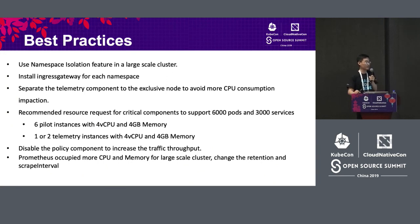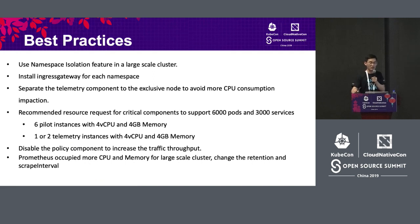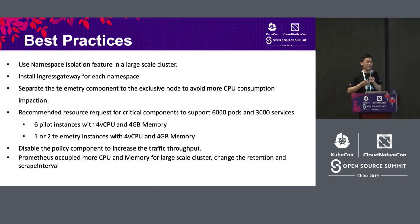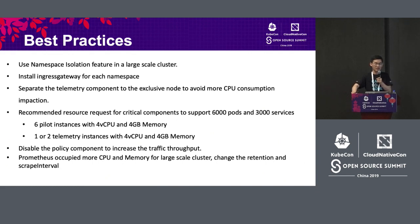Now I'll share some best practices based on our testing results. Number one: in a large-scale cluster, use the namespace isolation feature — you must enable namespace isolation because it is quite important. With the default Istio package there will be a file called global ServiceEntry; you can apply it and it takes effect for each namespace so they can isolate from each other. You can add the namespaces you want into this platform. Number two: for each namespace, install a dedicated ingress gateway.